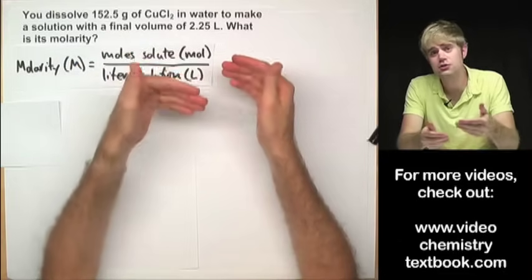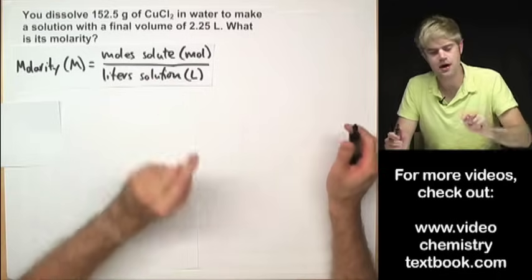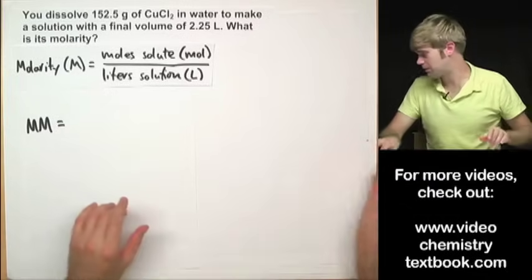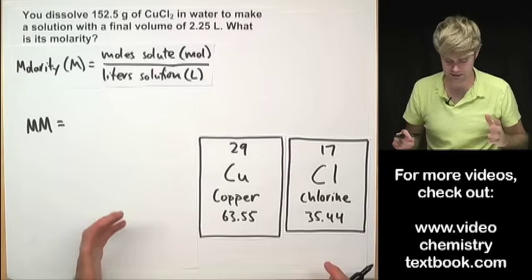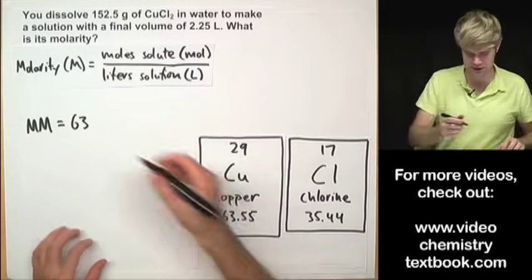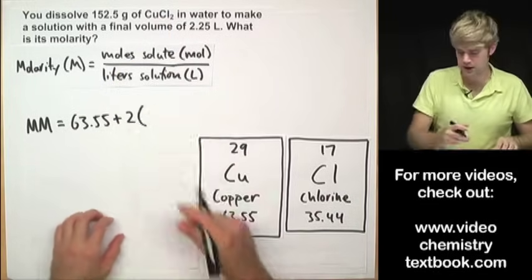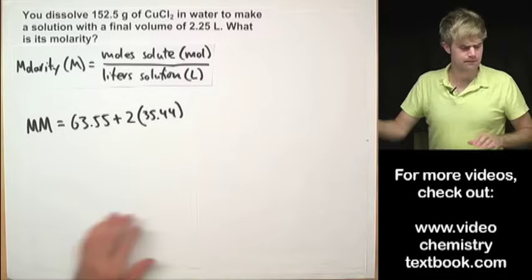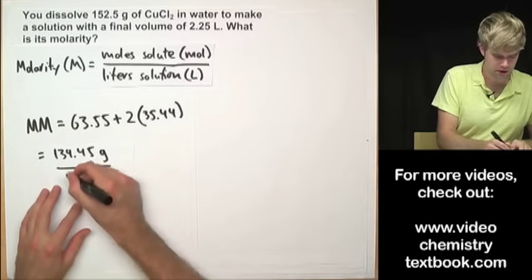We have to convert 152.5 grams to moles and then plug it into the molarity equation. To do that, we need the molar mass of CuCl₂. There is one Cu atom, so we take the molar mass of Cu: 63.55. There are two chlorines, so we add two times 35.44. Adding these together gives 134.45 grams per one mole.